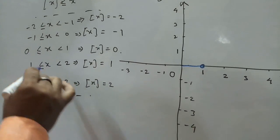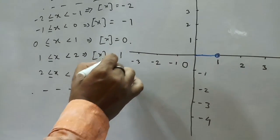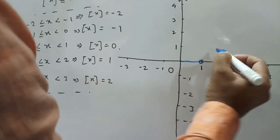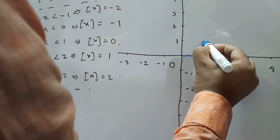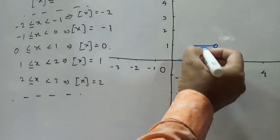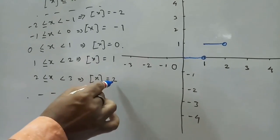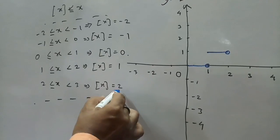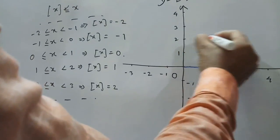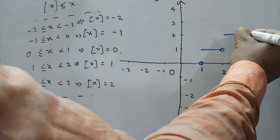When X lies between 1 and 2, Box[X] = 1. This gives a horizontal line at Y = 1 from X = 1 to 2, closed at 1 and open at 2. Similarly, when X lies between 2 and 3, Box[X] = 2, giving a horizontal line at Y = 2 from 2 to 3, open at 3.